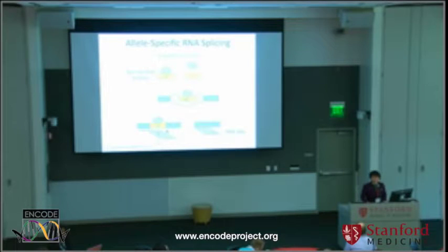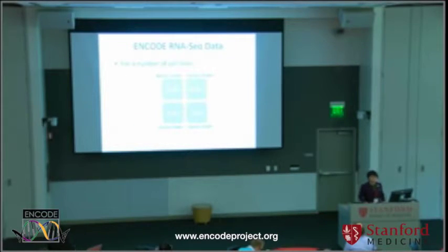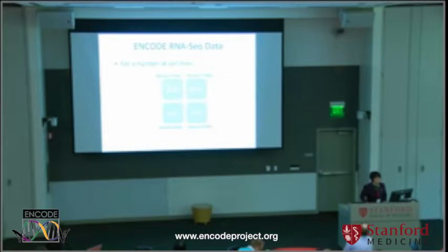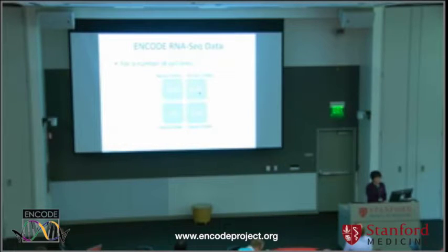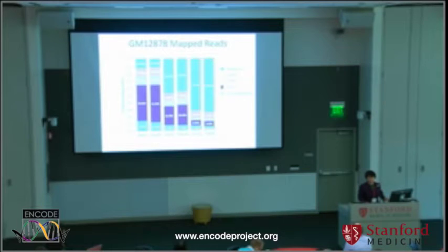What about intronic SNPs? Using regular poly-A selected RNA, we actually missed most of the intronic content in the RNA-seq reads. To go after intronic splicing regulators, we made use of the ENCODE cell fractionation RNA-seq data generated in Tom Ginger's group. For a number of ENCODE cell lines, we have four different types of RNA-seq data: nuclear or cytoplasmic RNA, which can be poly-A minus or polyadenylated. We developed a new approach to deal with intronic regulators.